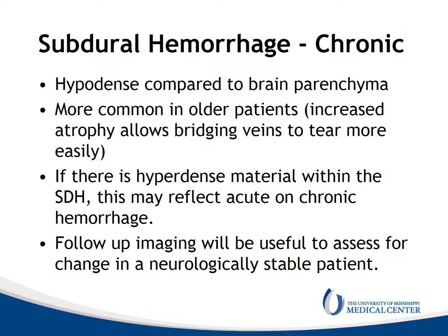Chronic subdural hematomas are hypodense compared to brain parenchyma. They're more common in older patients where increased atrophy allows the bridging veins to tear more easily. If there is hyperdense material within the subdural, this may reflect that it's acute on chronic, and you'd want to do follow-up imaging to assess for change if the patient is neurologically stable and doesn't need to immediately go to the operating room.